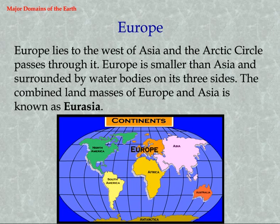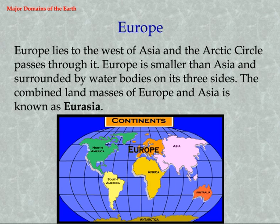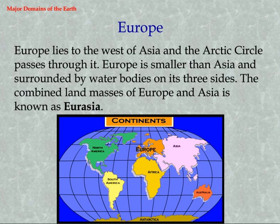Europe lies to the west of Asia and the Arctic Circle passes through it. Europe is smaller than Asia and surrounded by water bodies on its three sides. The combined land masses of Europe and Asia is known as Eurasia.